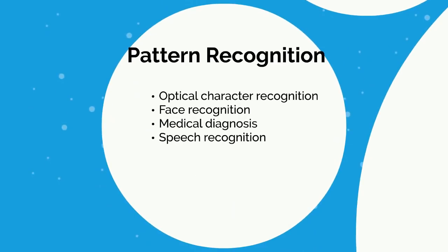Another feature of classification algorithms is pattern recognition. Use cases include optical character recognition, face recognition, medical diagnosis, and speech recognition. When you look at the letter A, you can distinguish it pretty easily. However, you might not be able to describe exactly why it's an A. Everybody's handwriting differs, and it's not always easy to tell — but using context clues, the words around it, and how letters have been written in the past, we're usually able to deduce what the person means.